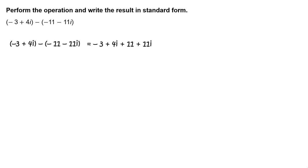Next, use the distributive property. Rewrite as negative 3 plus 4i plus 11 plus 11i. Group like terms — the quantity times i.